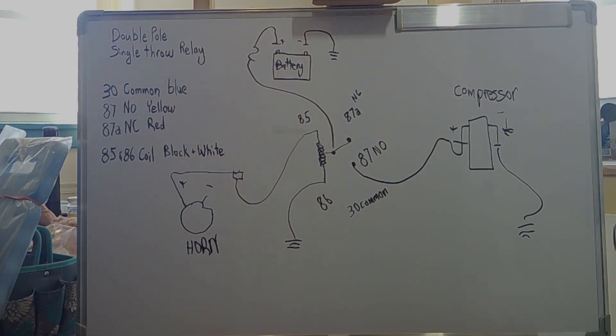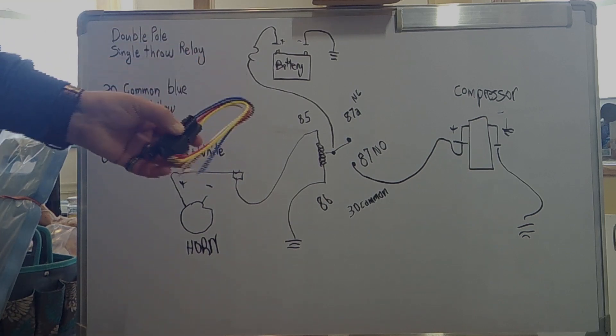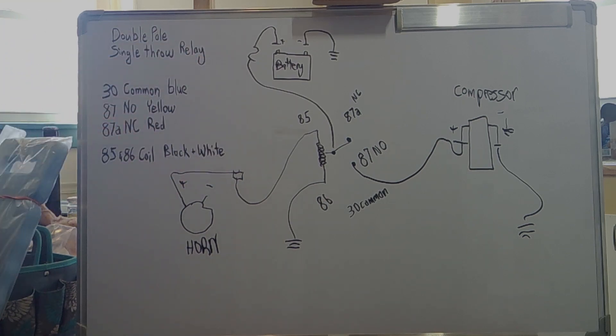It's pretty simple and not that complicated. So you have to remember that pin 30 is your common. On a Bosch relay, that's a blue wire. 87 is your normally open circuit, which is yellow on the Bosch relay.